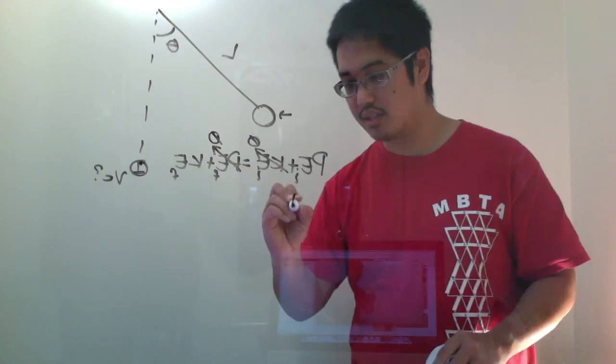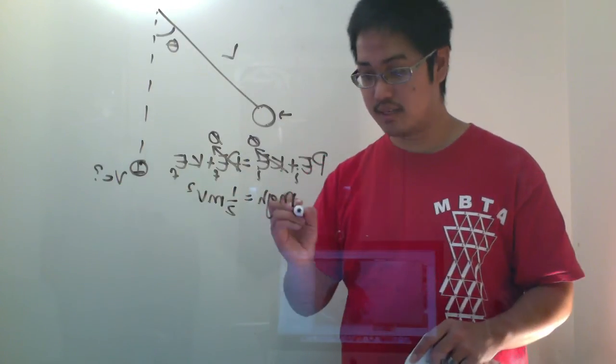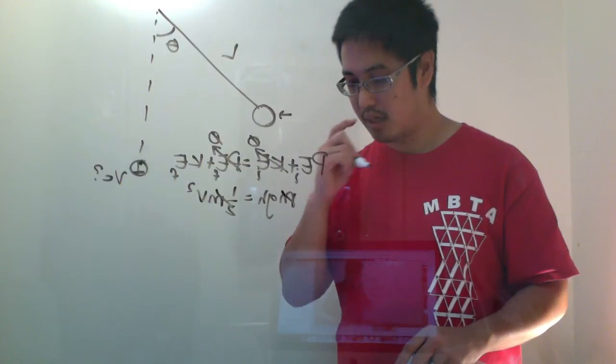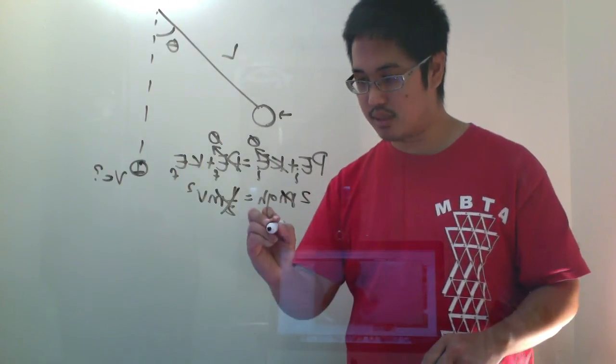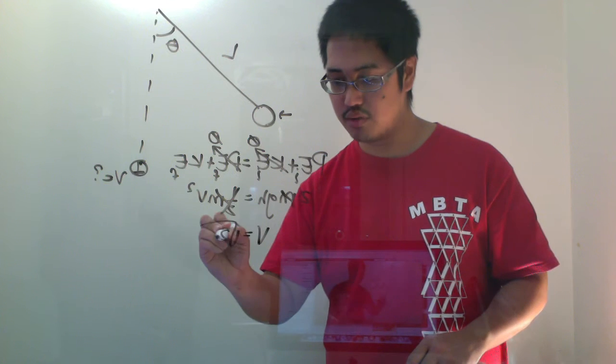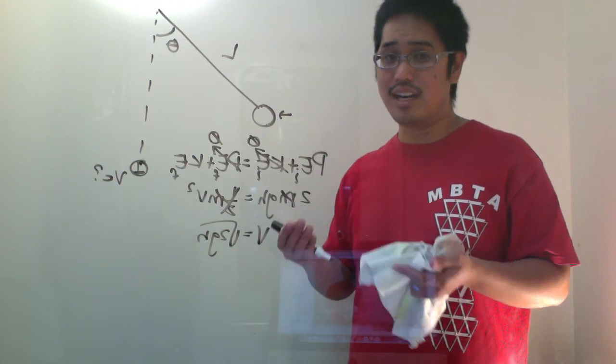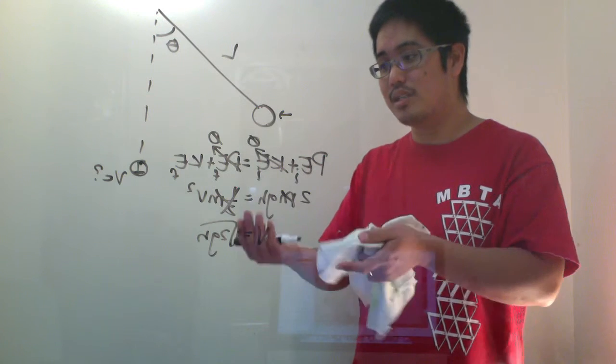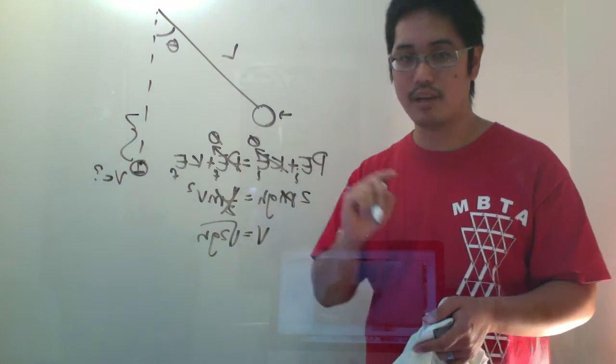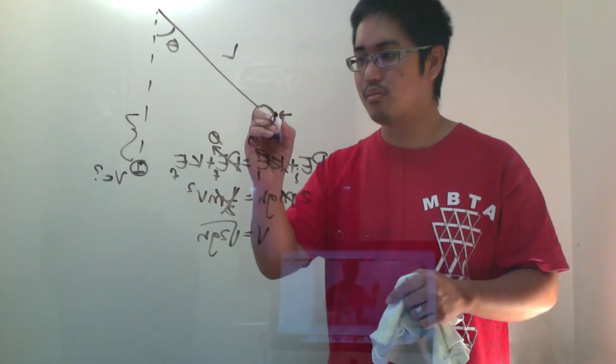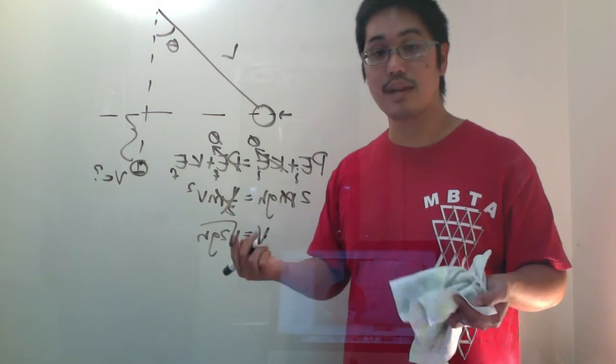So I have this equation, mgh is equal to one half mv squared. The masses cancel, that's interesting. I move this two up here, take the square root of both sides, so I have v equals the square root of 2gh. Here's the hard part, here's the little trick, is I don't have the height at which I dropped it. How high above this point did I drop it at? What is the vertical distance between the initial point and the final point? But you can find that using basic trigonometry.